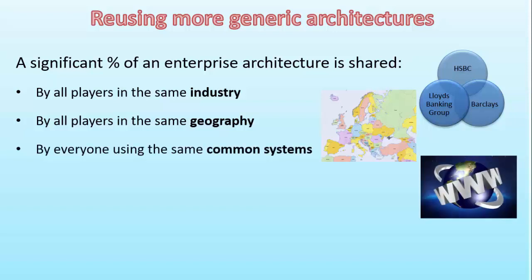There are also a very large number of common systems, and increasingly there are common systems shared by large groups of people — everyone using the same common systems. The internet is obviously the biggest example here. But if we go back to our example of the financial services industry, a lot of players in that industry share the same infrastructure for processing transactions and processing payments.